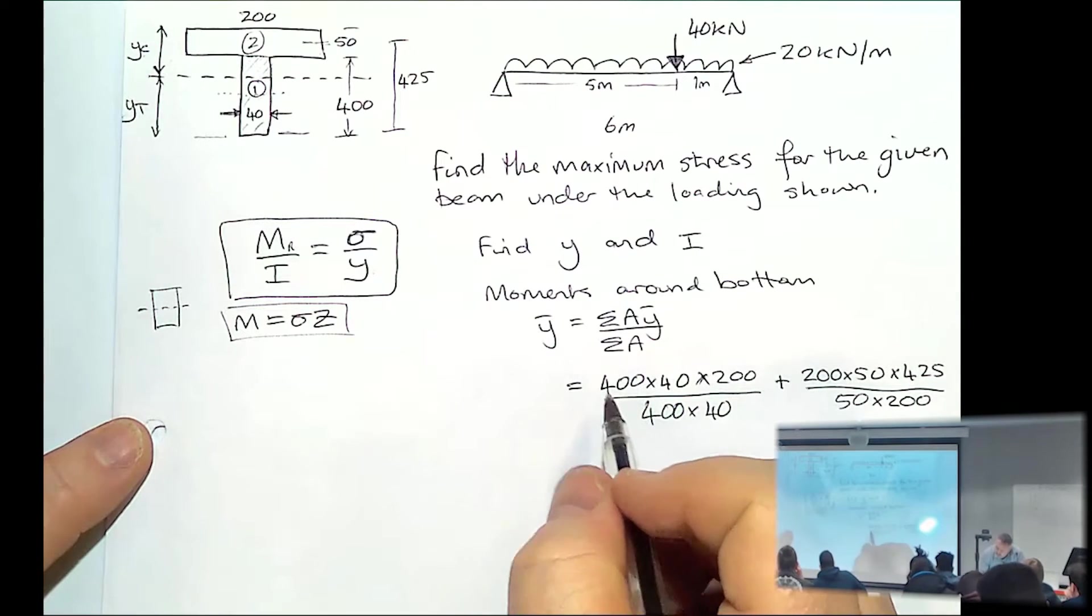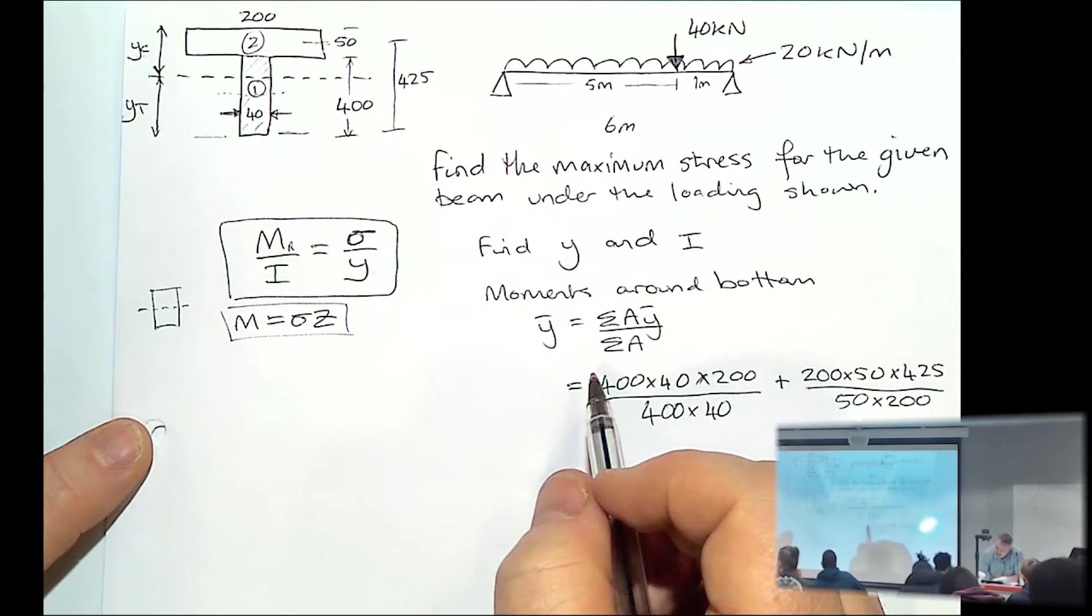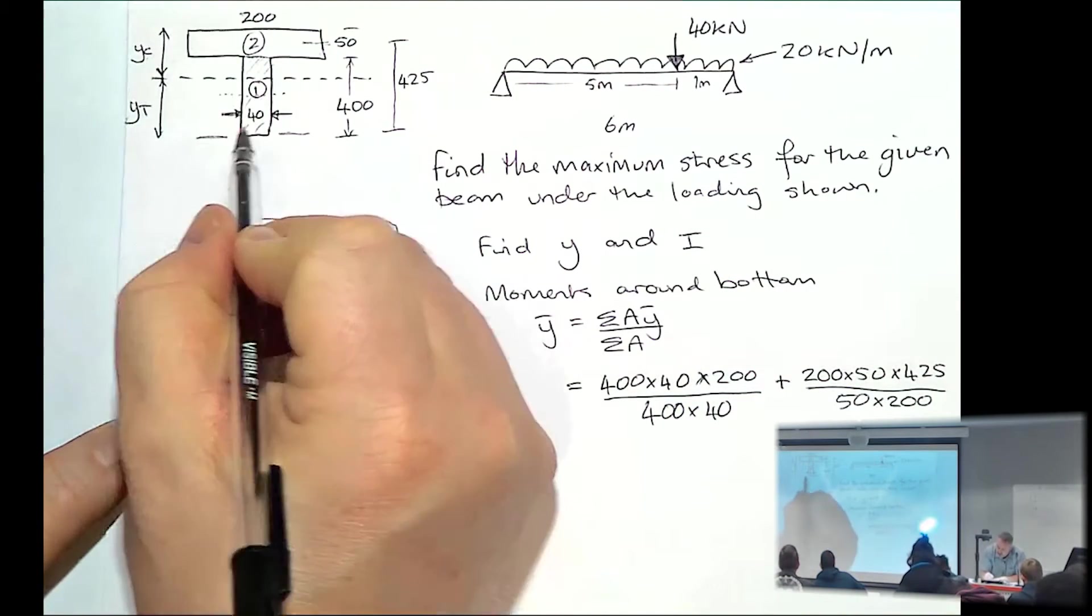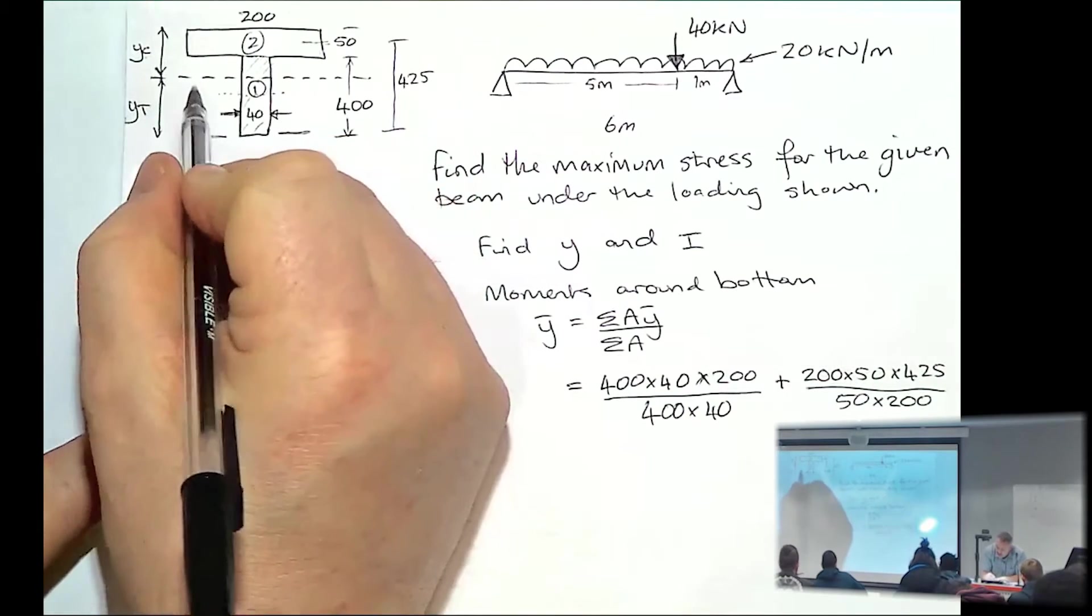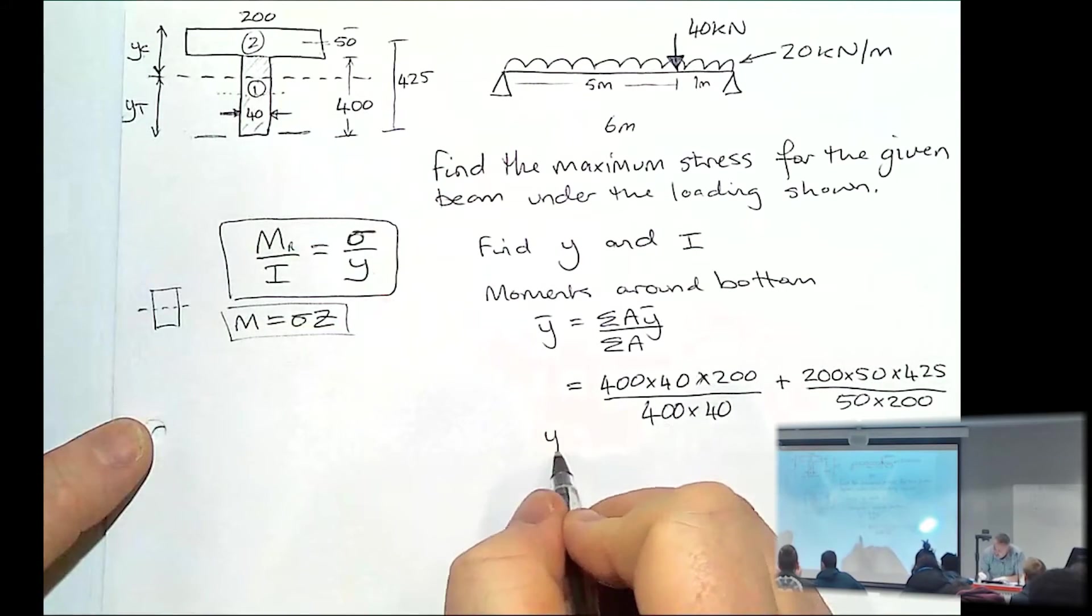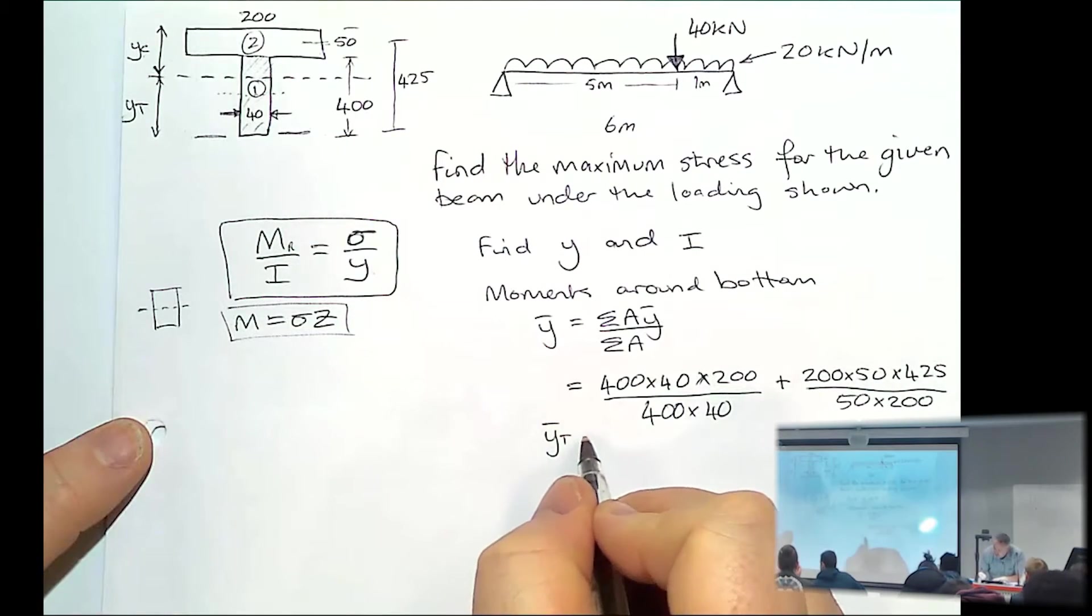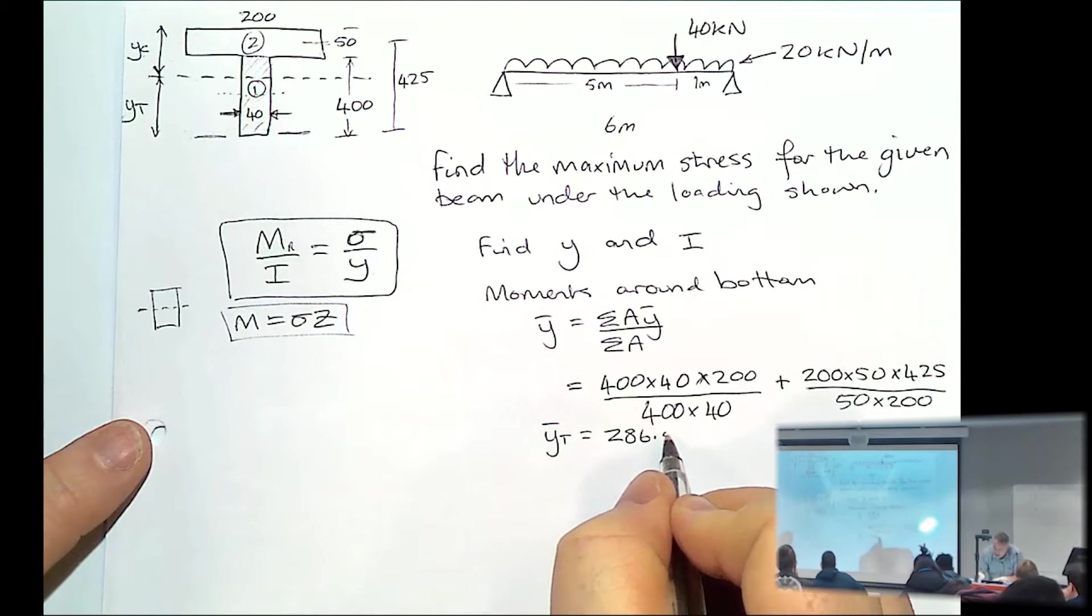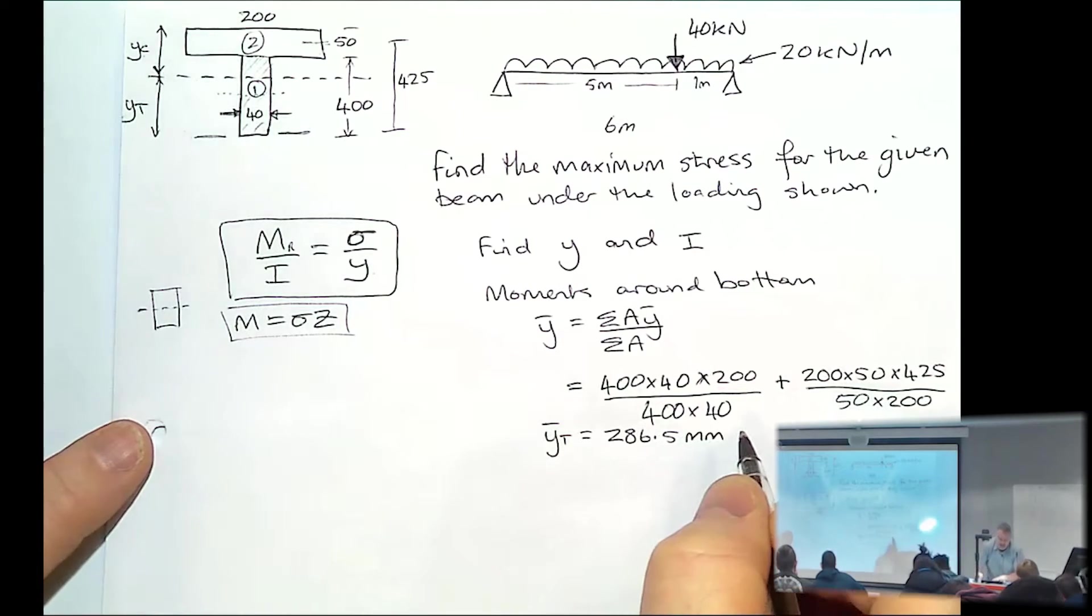So this Y bar, because we take moments around the bottom, it's the distance, this Y T. So this Y bar T, so it's the Y from the bottom, comes to 286.5 millimeters. That's the position of the neutral axis.